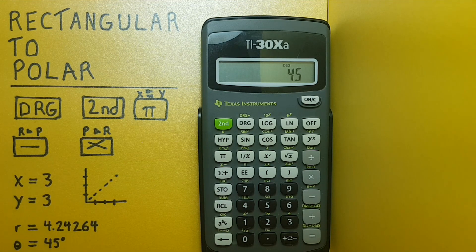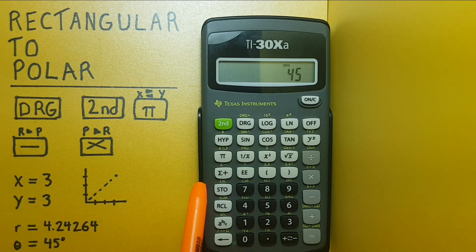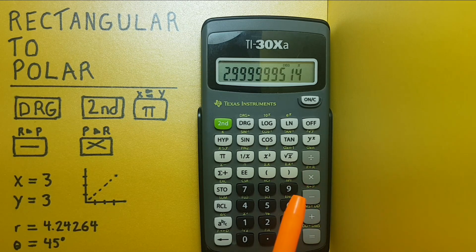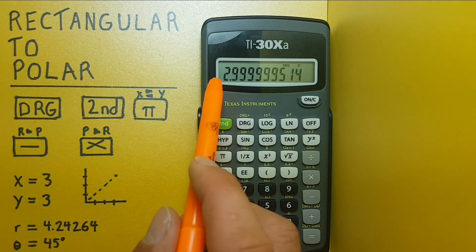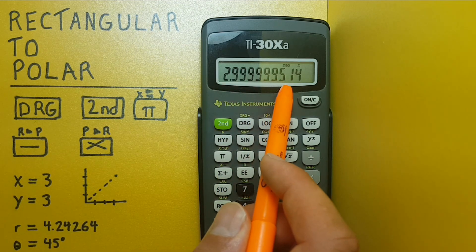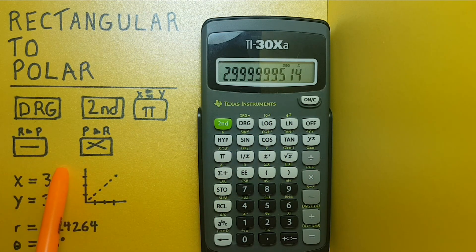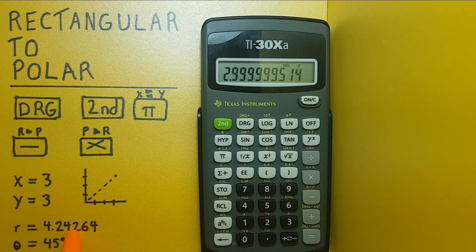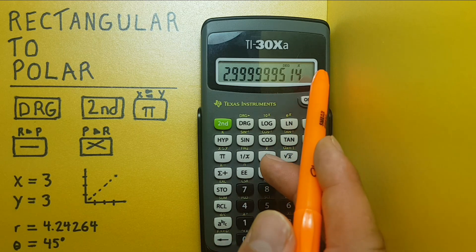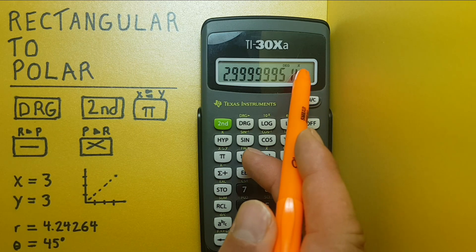And now we want to convert these coordinates from polar to rectangular. So, second function, multiplication. And this gives us our x coordinate of 2.99999, which rounds to 3. The reason it didn't come out as perfectly 3 is we didn't include all the decimal places. And you can see the x in the top corner there, that's confirming that this is our x value.